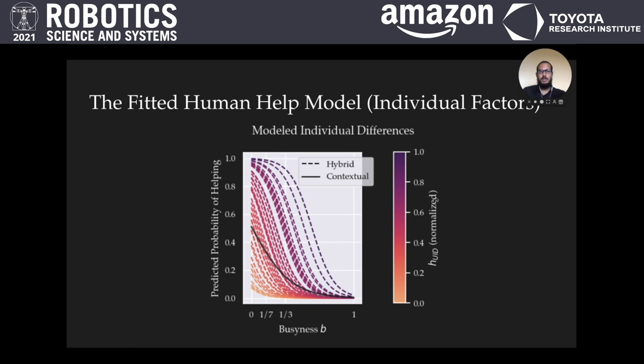This graph of our learned model illustrates the importance of accounting for both individual and contextual factors. The x-axis is human busyness, and the y-axis is their predicted probability of helping. Users span the gamut, from those who are never willing to help the robot, to those who are willing to help, even as they get busier. However, a version of this model that only accounts for contextual factors, the black line, would be unable to capture that variability in human behavior.